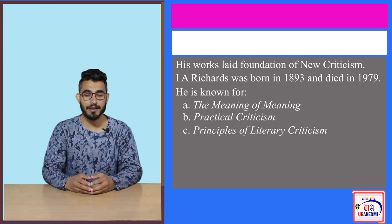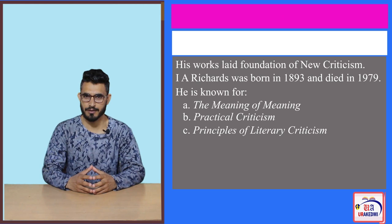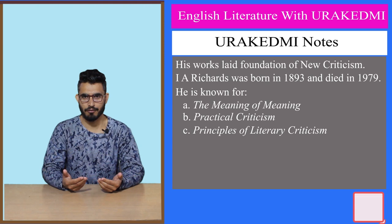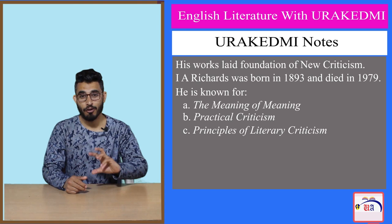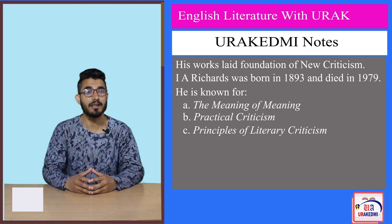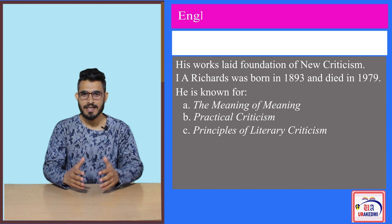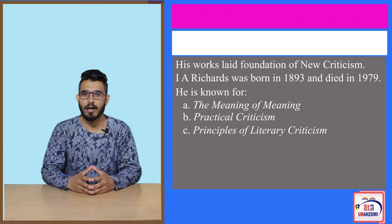In practical criticism, he would lay some foundations for how we can understand a text correctly. I.A. Richards was also concerned with the meaning of language and how words get meaning when they are spoken. To understand a statement correctly, he gave us four kinds of meaning, dealing with sense, tone, intention, and feeling. He says that when these four components are put together, it is only then that the meaning of a particular statement is clear.